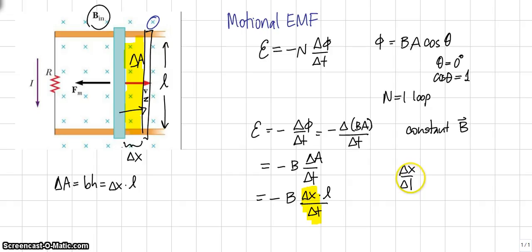In this case, actually always, delta X over delta T, the distance over the time, is the speed at which the bar is moving, V. So I can substitute B times V times L for the EMF in the moving conductor.